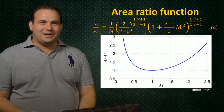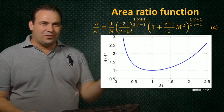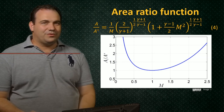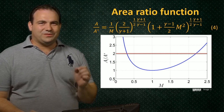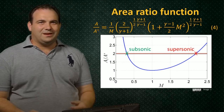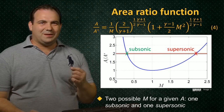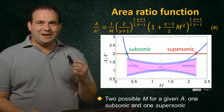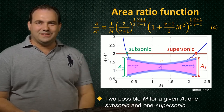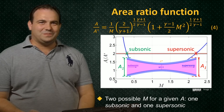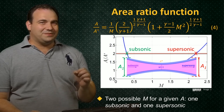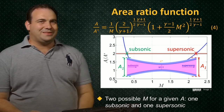Let's look at the area ratios predicted by equation 4 over a wide range of Mach numbers. We immediately notice something interesting: for a given area ratio, the flow could have two possible Mach numbers — one subsonic and one supersonic. This makes sense because, thinking back to the De Laval nozzle, a given area A1 occurs both in the subsonic and the diverging supersonic portion of the nozzle. This implies that the state of a compressible flow at any point depends not only on the local area, but on how the flow arrived at that area.